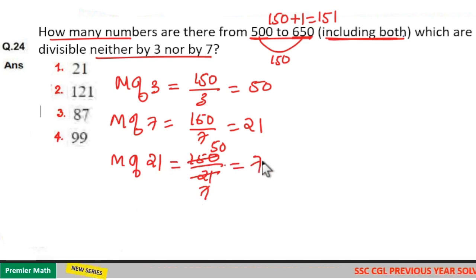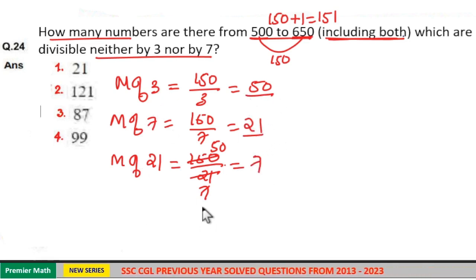Now this 7 is the multiples of both 7 and 3. This 7 is included in 50 plus 21, which is 71 numbers. When you subtract these multiples of 3 and 7 from the 151 numbers, you will get numbers which are divisible neither by 3 nor 7 between 500 to 650.